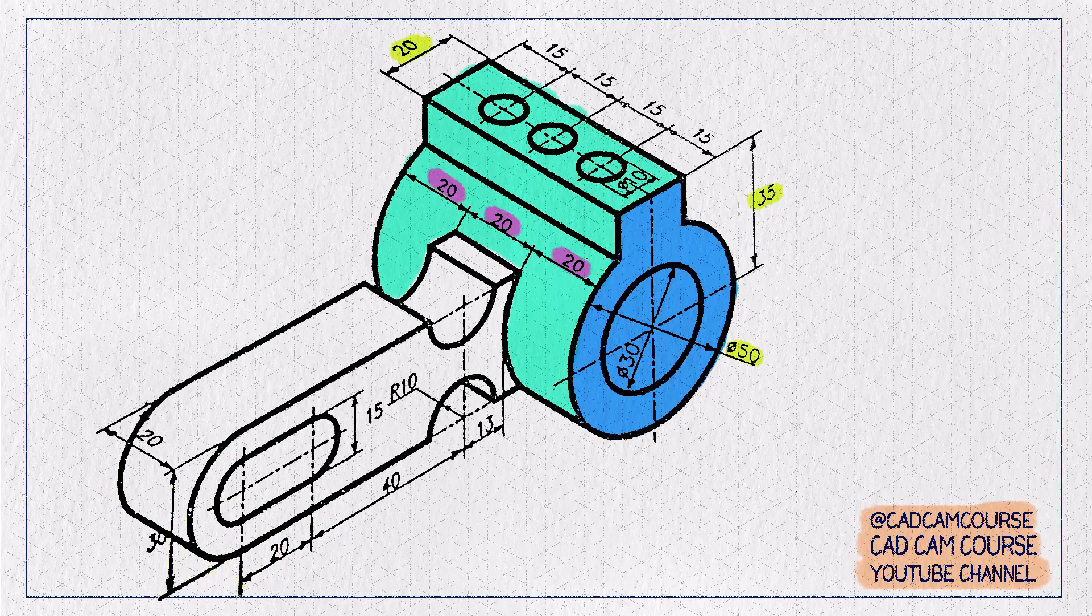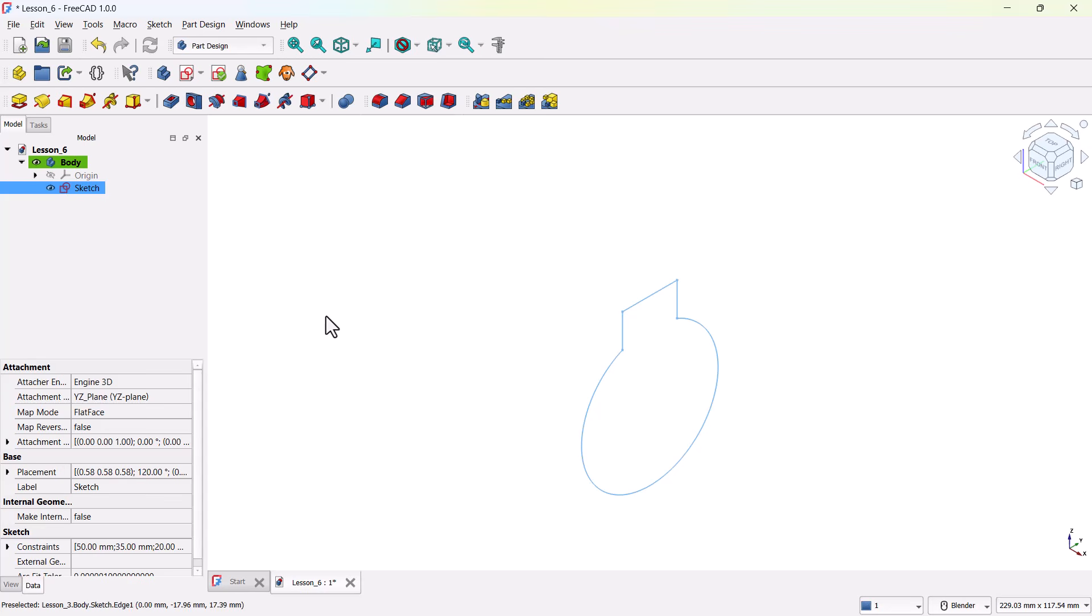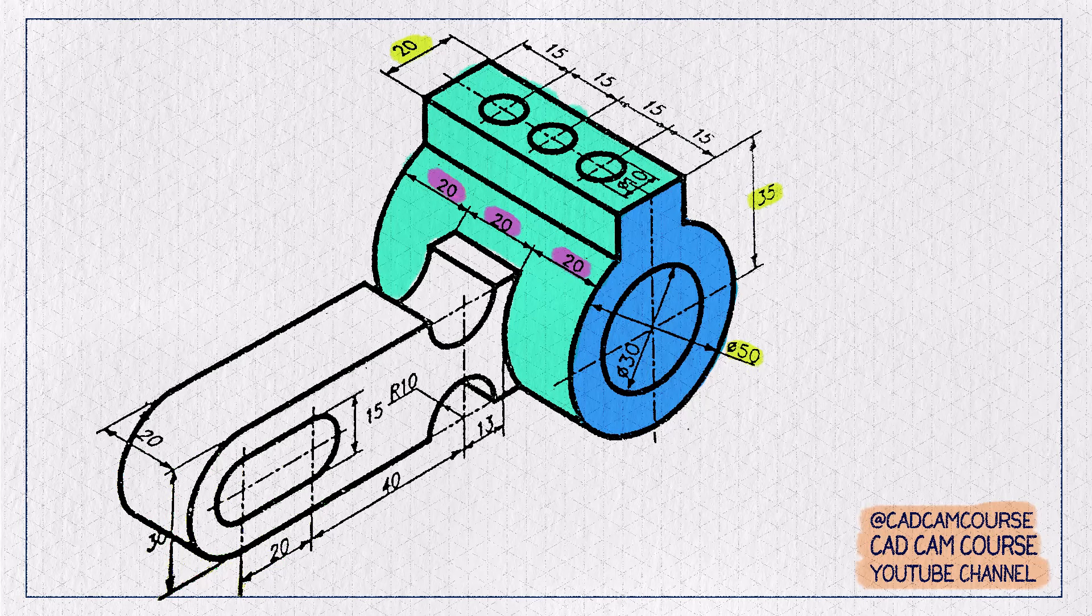Now for step number two, while this sketch is selected, select the Pad tool. And from this drawing, if you see, the extrusion length is 20 plus 20, that is 60 millimeters.